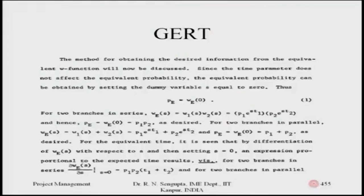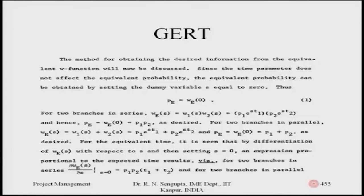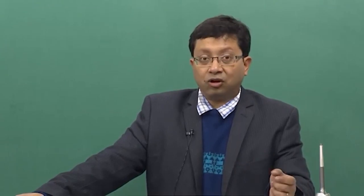The method for obtaining the desired information from the equivalent W function will now be discussed. Since the time parameter does not affect the equivalent probability, the equivalent probability can be obtained by setting the dummy variable S equal to zero. You can then differentiate the function at S equals zero and find out the overall characteristics of that function.